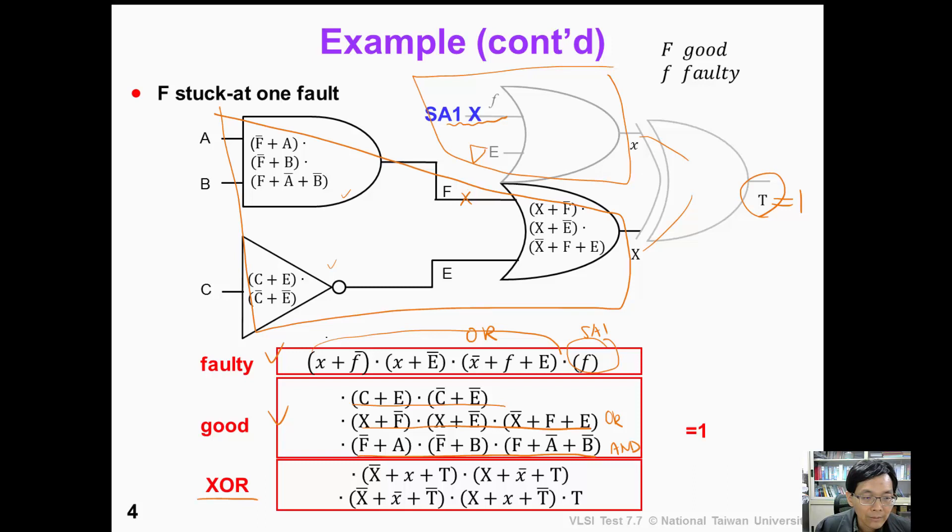Finally, the last five clauses correspond to the exclusive-OR gate, and T must be 1. So we solve this Boolean formula and we can find a good test pattern.